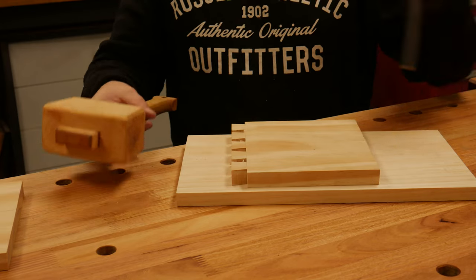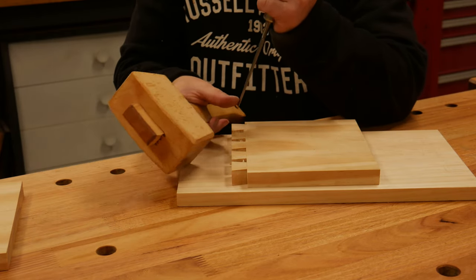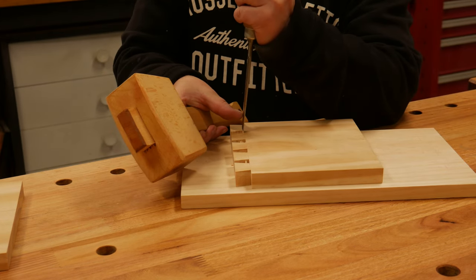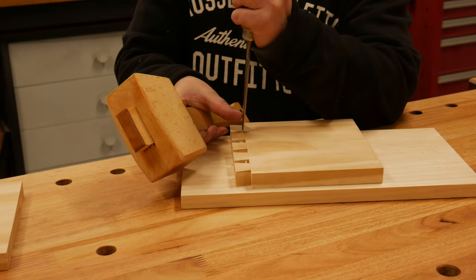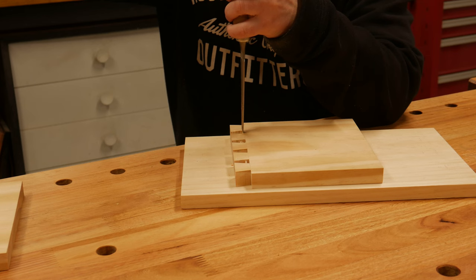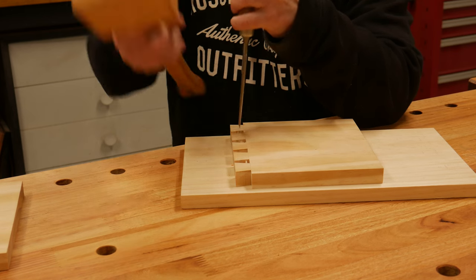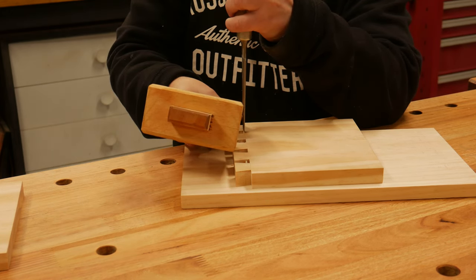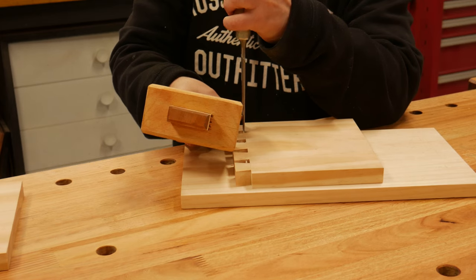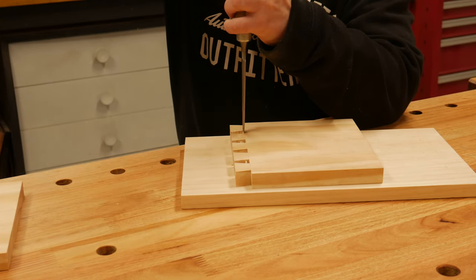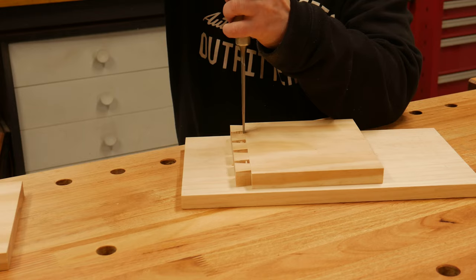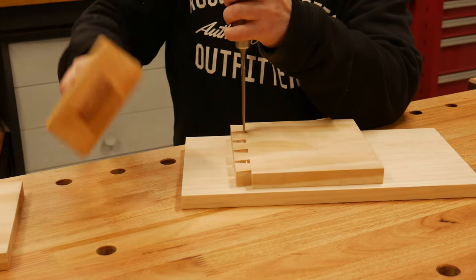I use my thumb to guide the chisel into position. And when the final cut is taken, you will feel it drop into the gauge line. It's good to chop from the inside face about halfway down. Flip the board over, then chop from the outside face. This reduces the chance of any blowout on the show side.